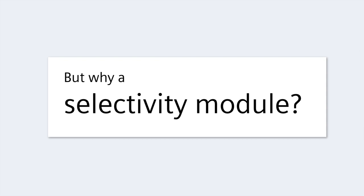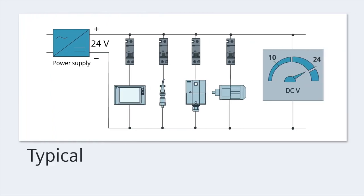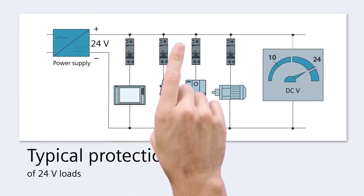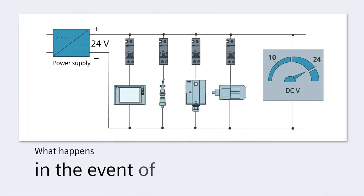But why is a selectivity module necessary? Typically, 24-volt loads are protected by means of miniature circuit breakers. What happens if a fault occurs, for example a short circuit?